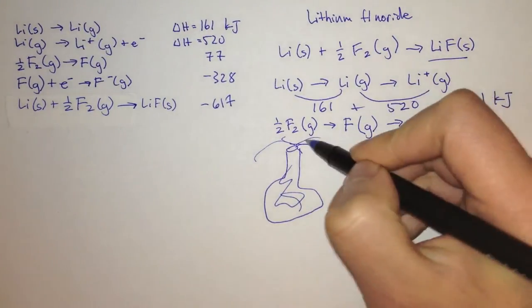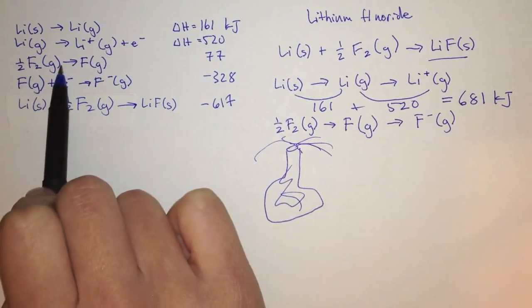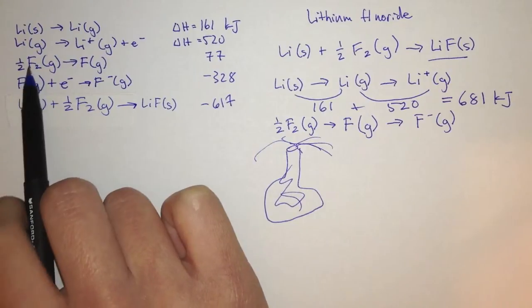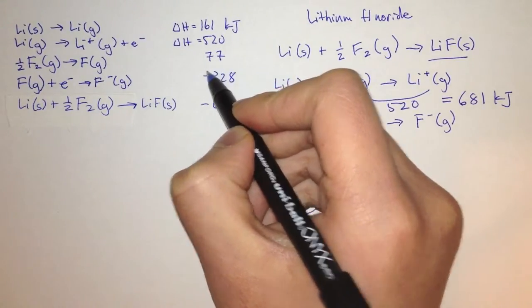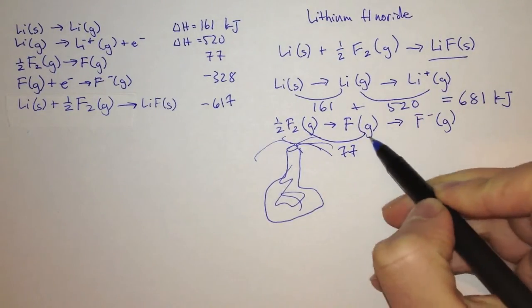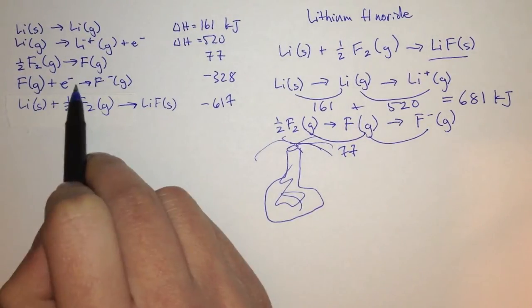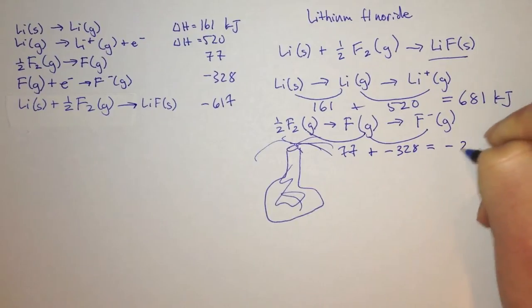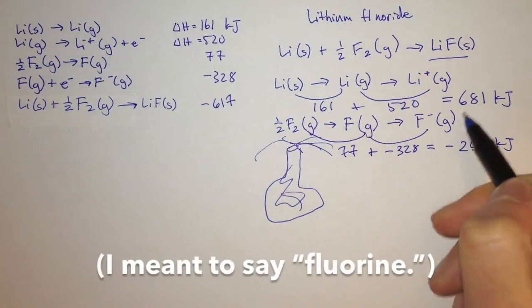We do the same with fluorine. To break the bond, we should always be careful with these equations: this time the equation takes half of F2 and makes 1 F, so we can use the 77 kJ number directly. Taking gaseous fluorine and giving it an electron to make F- is -328 kJ. Adding these up, we get -251 kJ for the heat of formation of a gaseous fluoride ion.